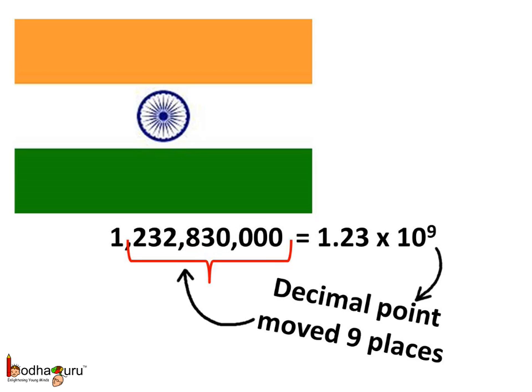Thus, any huge number can be expressed as a number between 1 to 10 multiplied by 10 raised to some integer. For example, the population of India is almost 1,232,830,000. And this we can simply write it as 1.23 multiplied by 10 to the power 9.